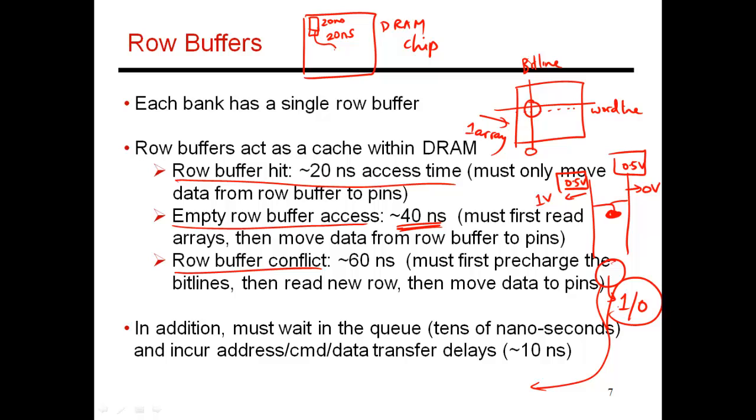The third option is a row buffer conflict. When the row buffer currently contains some row x, and you're trying to read a different row y. So before you can read a different row y, you have to first take the bit lines back to this 0.5 volt value. And that's the pre-charge process. So when you do a pre-charge, you're essentially destroying the contents of the row buffer, and saying that I'm going to bring these bit lines back to an equal voltage, and that gets me ready to access a new row.